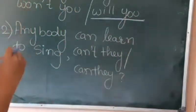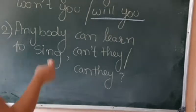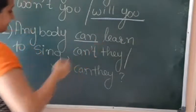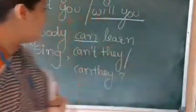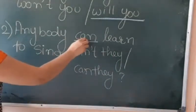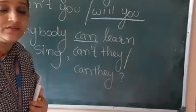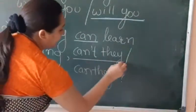Now the second one: 'Anybody can learn to sing.' Here the helping verb is 'can.' Since the sentence is positive, the question tag will be negative. So what you will underline is: can't they?